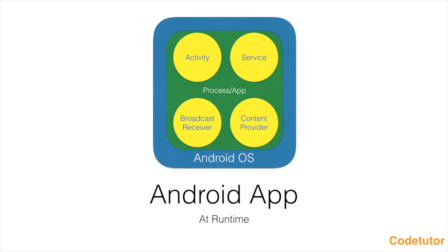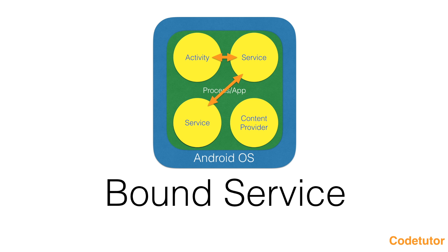An activity may want to bind to a service to get some status update. It need not be an activity always — it could be another service which might be interested in connecting to a service to get some status update. In either of these cases, the activity is trying to bind to a service, and the service which is providing this information to the activity or another service is called a Bound Service.